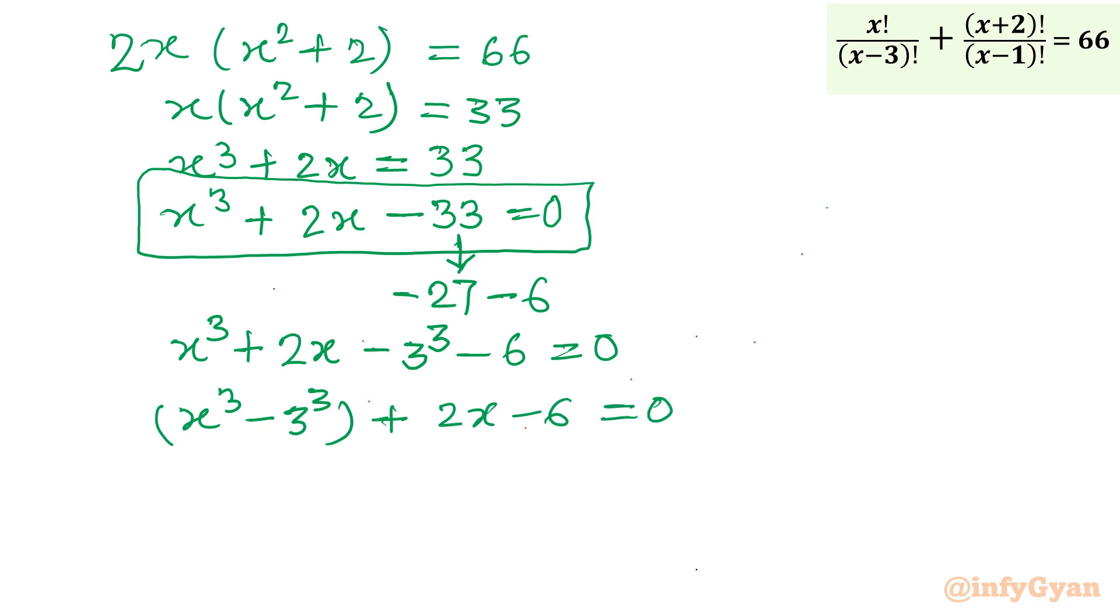Now I will use one identity. I can write my identity formula: a cubed minus b cubed equals a minus b times a squared plus ab plus b squared. Let's apply to our equation. I will write here x minus 3, second bracket a squared so x squared plus ab so 3x plus b squared, that means 3 squared which is 9.